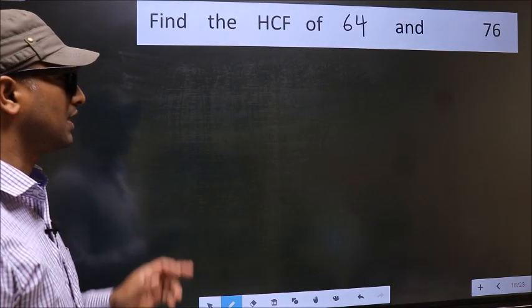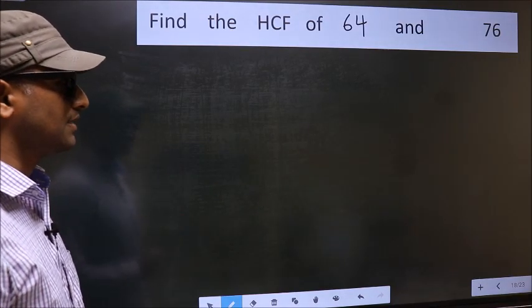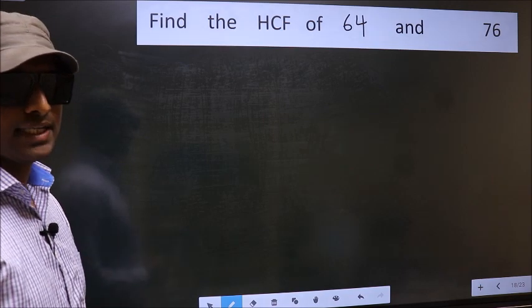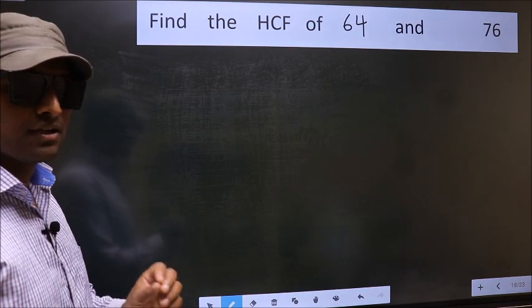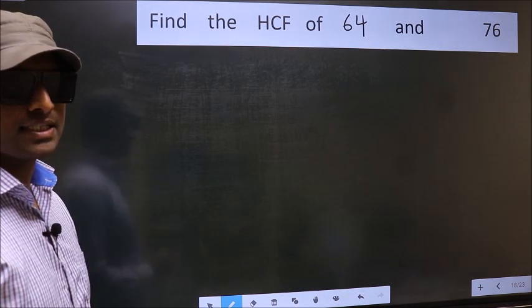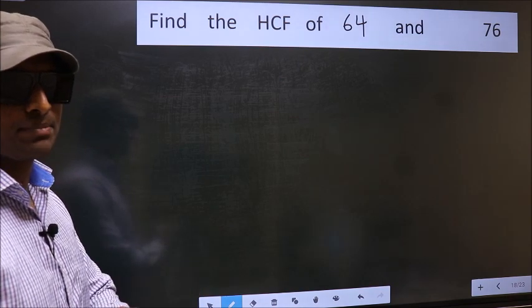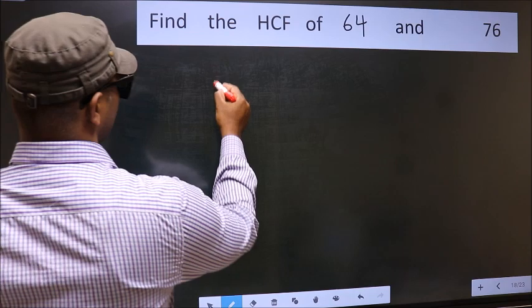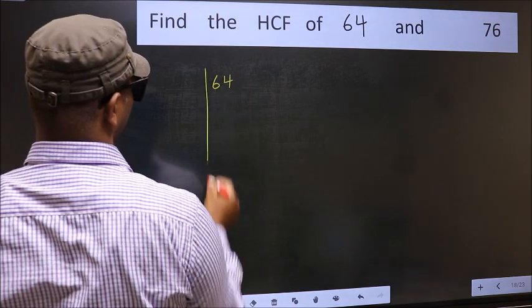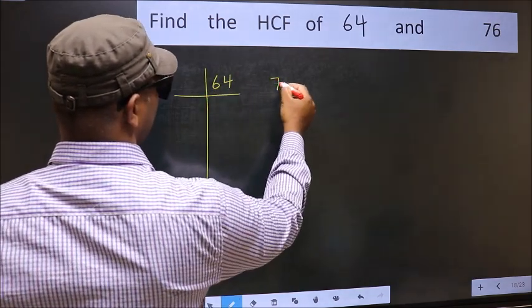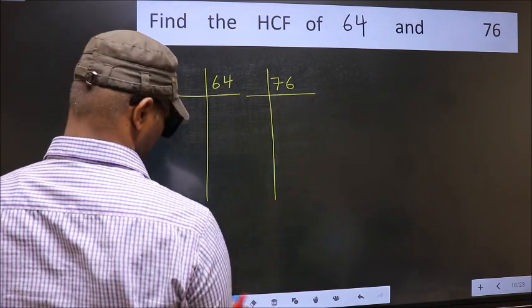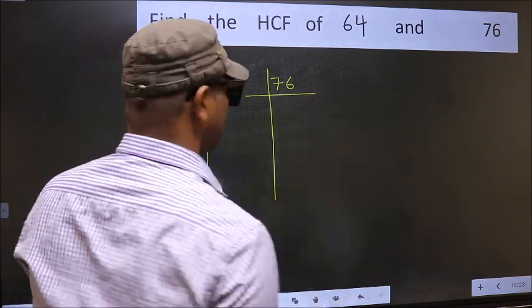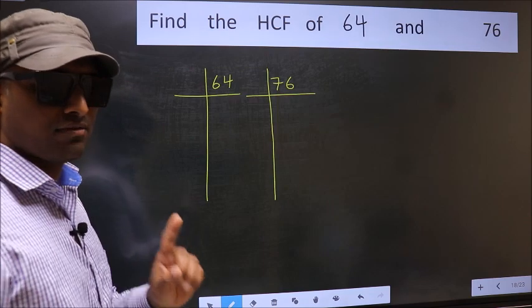Find the HCF of 64 and 76. To find the HCF, we should do the prime factorization of each number separately. What I mean is 64 and 76. This is your step 1.